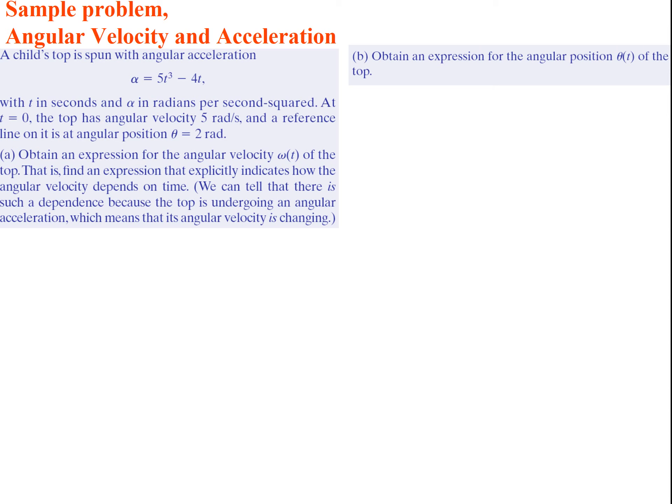Now let's move to another example. A child's top is spun with an angular acceleration given by alpha = 5t³ − 4t, where t is in seconds and alpha is in radians per second squared. At t = 0, the top has an angular velocity of 5 rad/s and a reference line at angular position theta = 2 radians. Part A asks for an expression for the angular velocity omega(t).